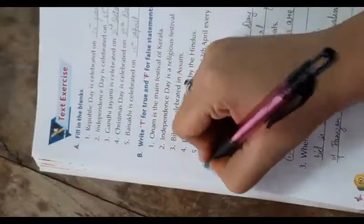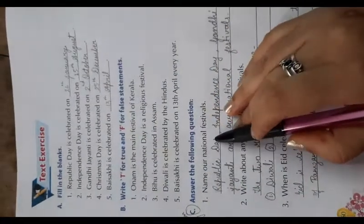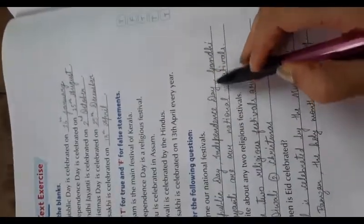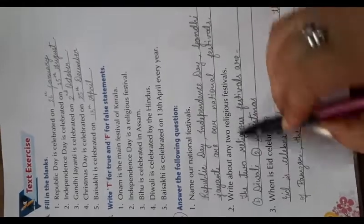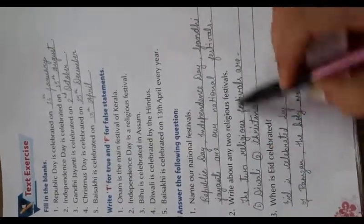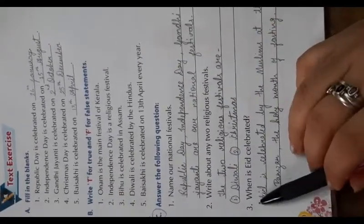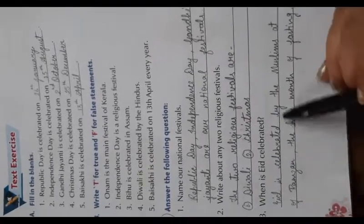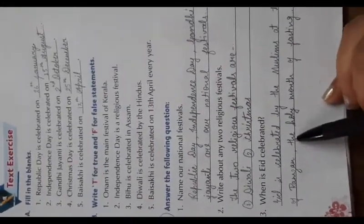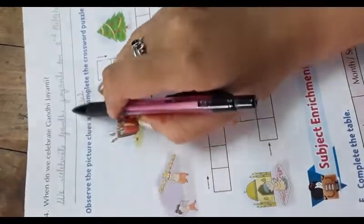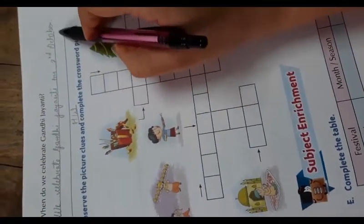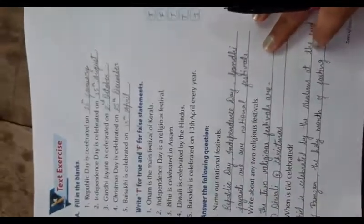Now question answers. You have to do this in your copy after your difficult words. Name our national festivals: Republic Day, Independence Day, and Gandhi Jayanti are our national festivals. Write about any two religious festivals: Diwali and Christmas. When is Eid celebrated? Eid is celebrated by the Muslims at the end of Ramzan, the holy month of fasting. When do we celebrate Gandhi Jayanti? We celebrate Gandhi Jayanti on 2nd October. We have completed the question answers.